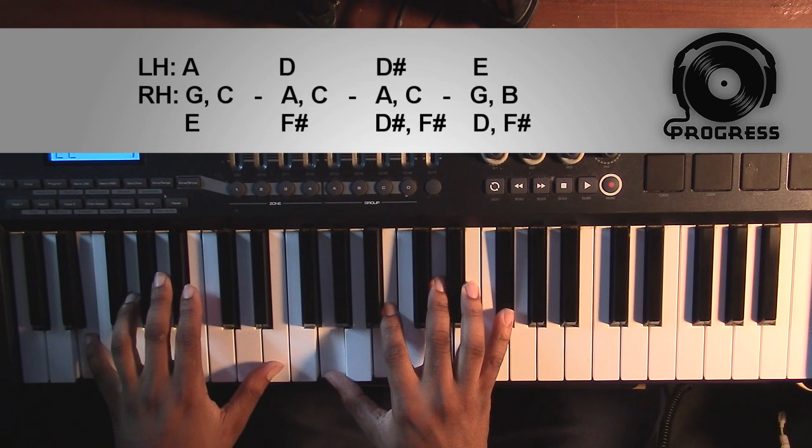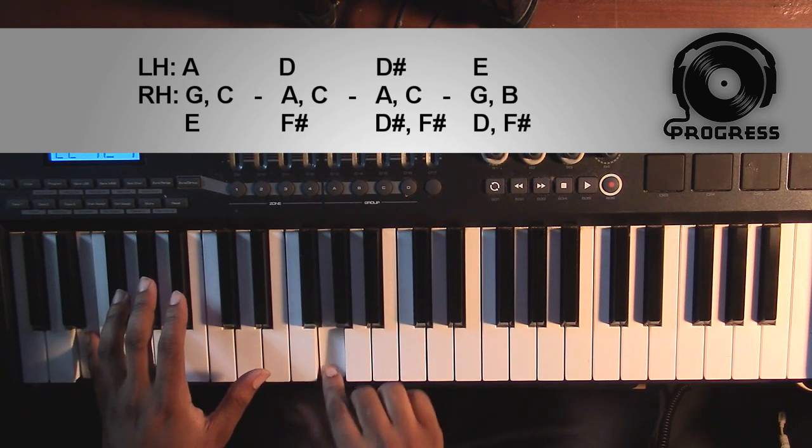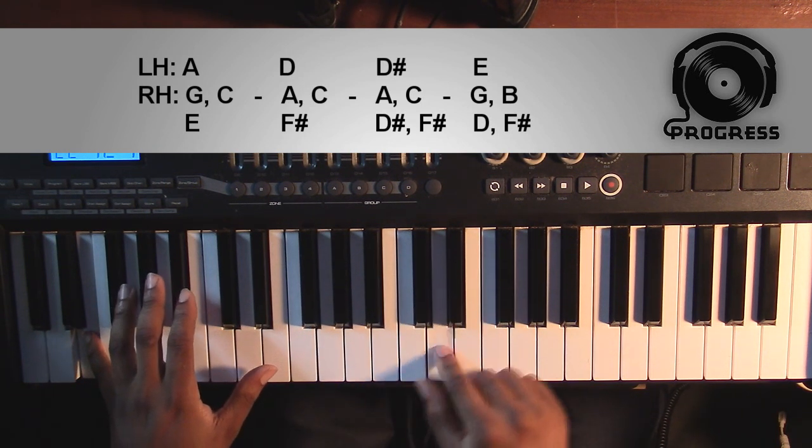Minor nine. Left hand you'll have an E, right hand you'll have a G, a B, a D, and an F sharp.